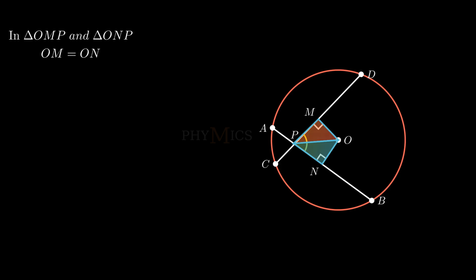Angle OMP is equal to angle ONP, as OM and ON are perpendiculars from point O. Segment OP is common to both triangles.